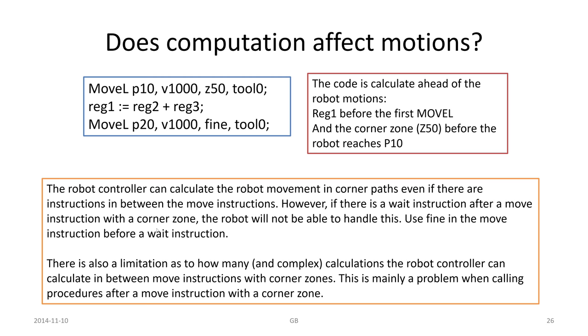There is a limitation as to how many and complex calculations the robot controller can calculate in between move instructions with corner zones. This is mainly a problem when calling procedures after a move instruction with a corner zone. There are some things to think about sometimes.